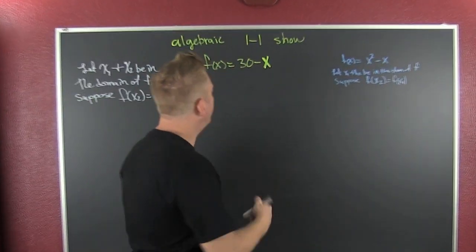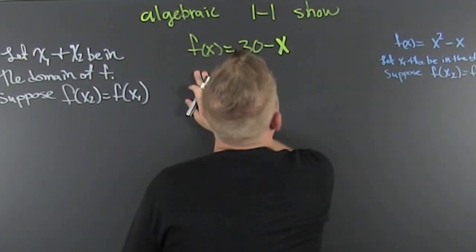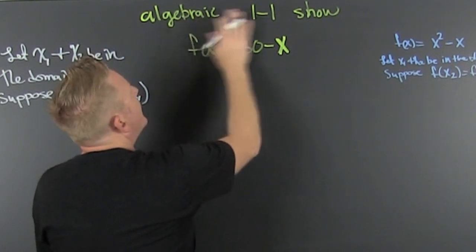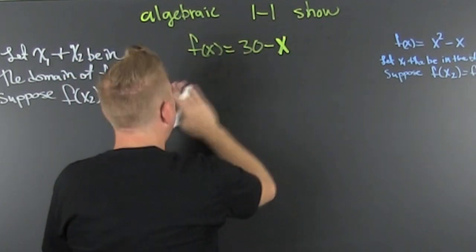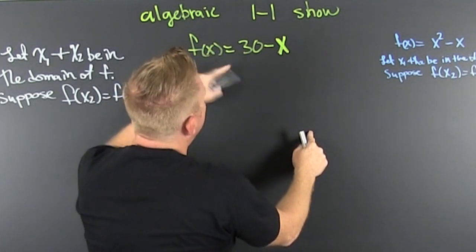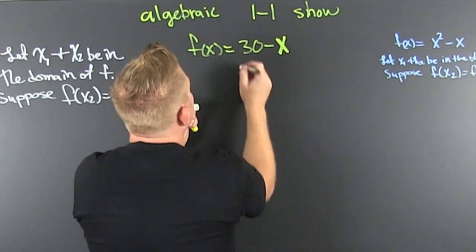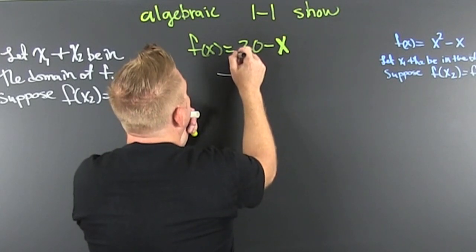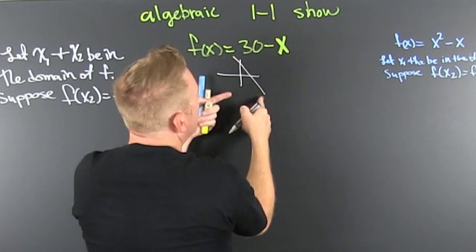Okay, so now that we got that definition of one-to-one, we want an algebraic show for this guy. What? It's a line. It's a line sloping down, and the y-intercept's at 30. If you looked at it, it would be like dirty. It'd look like that.